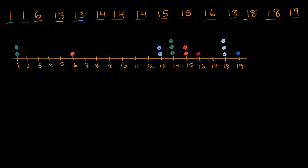When you look visually at the distribution of numbers, it looks like the meat of the distribution is in this area right over here. Some people might say we have three outliers — these two ones and the six. Some people might say the six is kind of close enough, and maybe only these two ones are outliers. Both of those would actually be reasonable things to say.